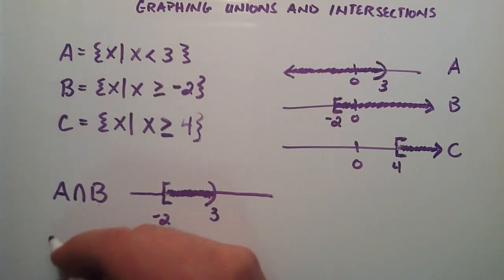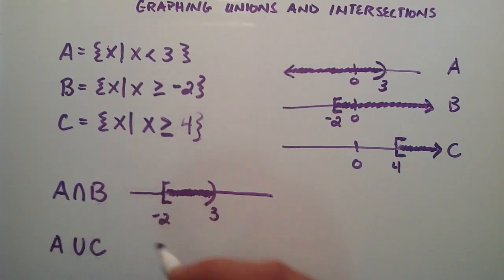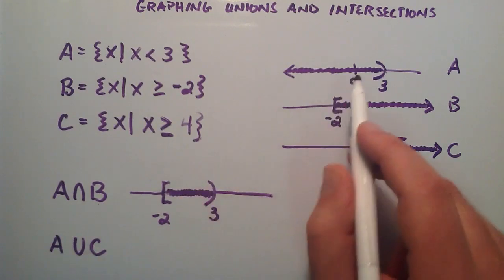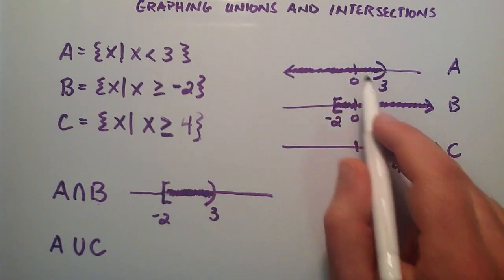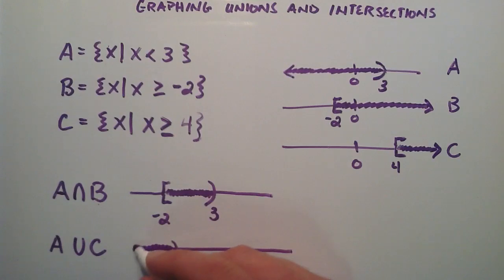Let's do A union C. Now with a union, we don't really care if the elements exist in both of them at the same time. We simply just write down all of the elements in A, and then we write down all of the elements in C. We simply look at A, and we're going to start at the number 3 here, and we just draw A's little graph right here.